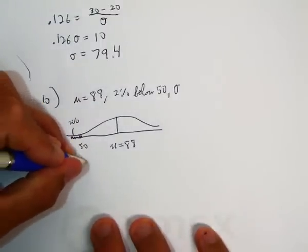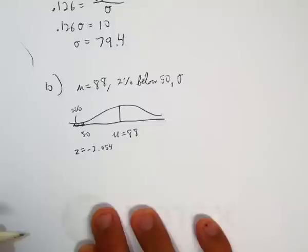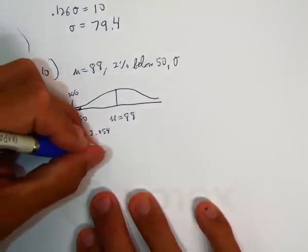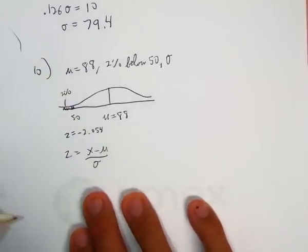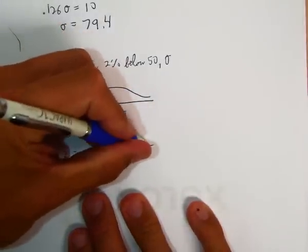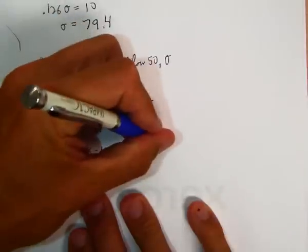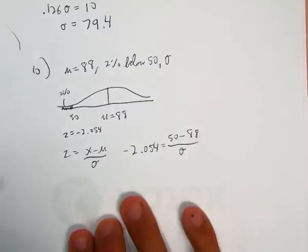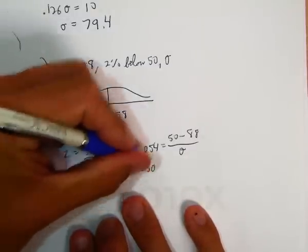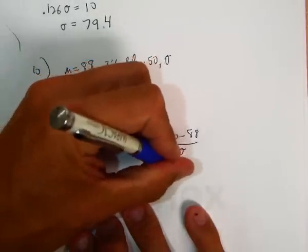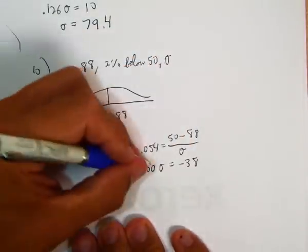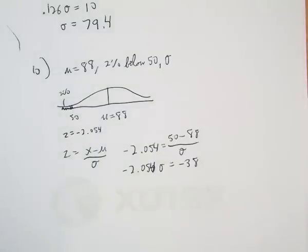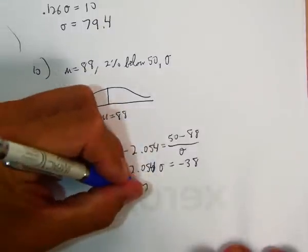So z equals negative 2.054. We're going to go to our z-score formula: z equals x minus mu 88 over sigma. And we fill in: negative 2.054 equals 50 minus mu 88 over sigma. Cross multiply, we get negative 2.054 times sigma equals negative 38. Divide negative 38 by negative 2.054 and you get around 18.5.